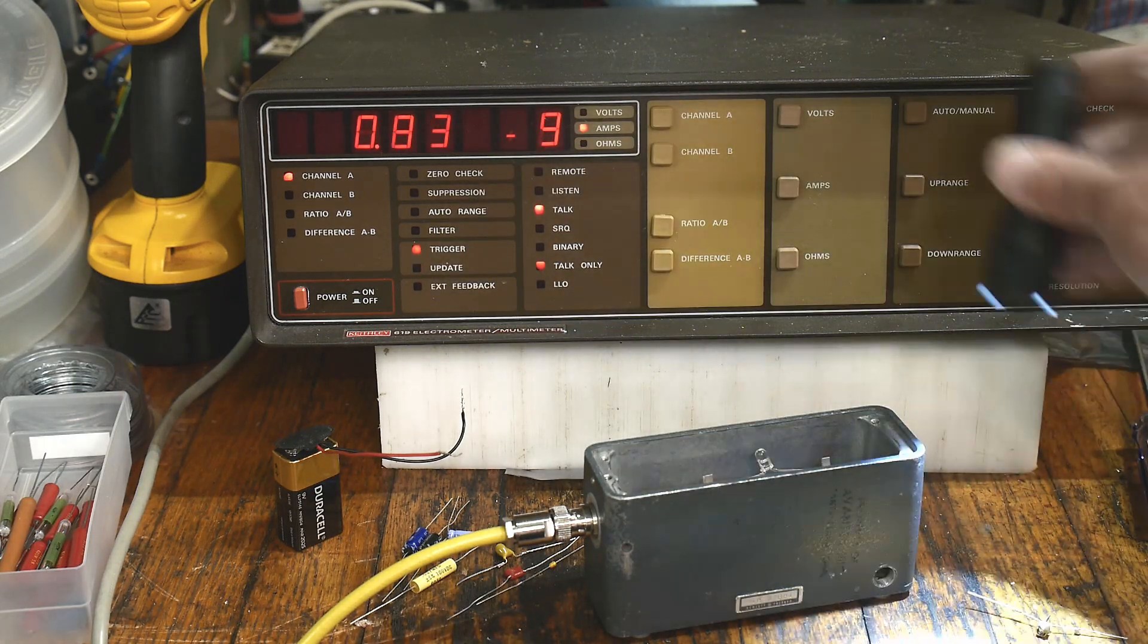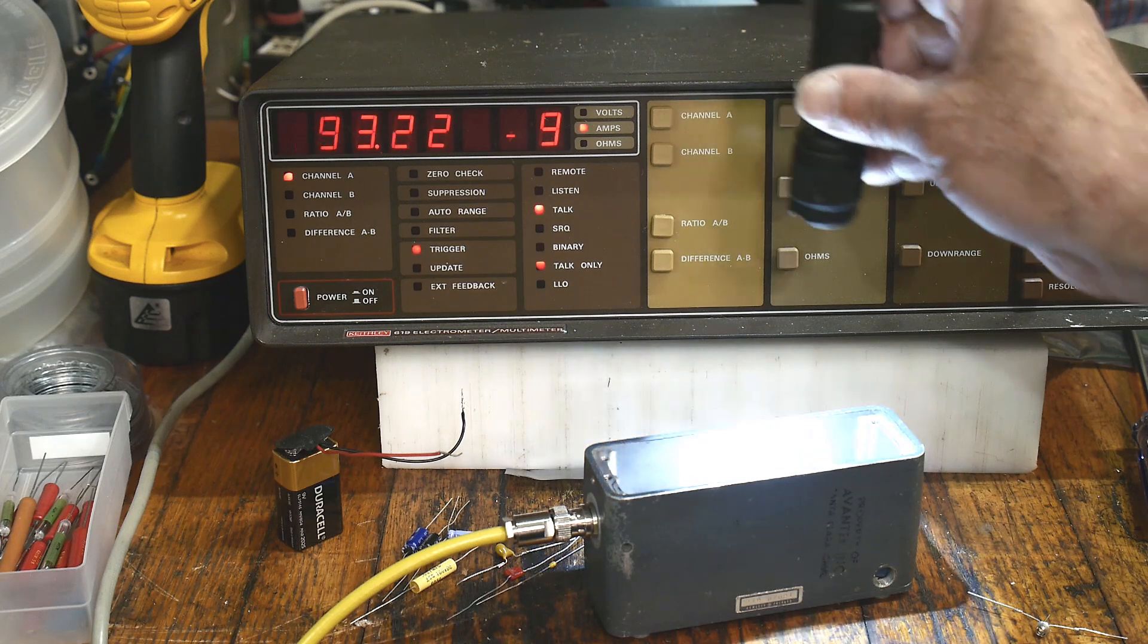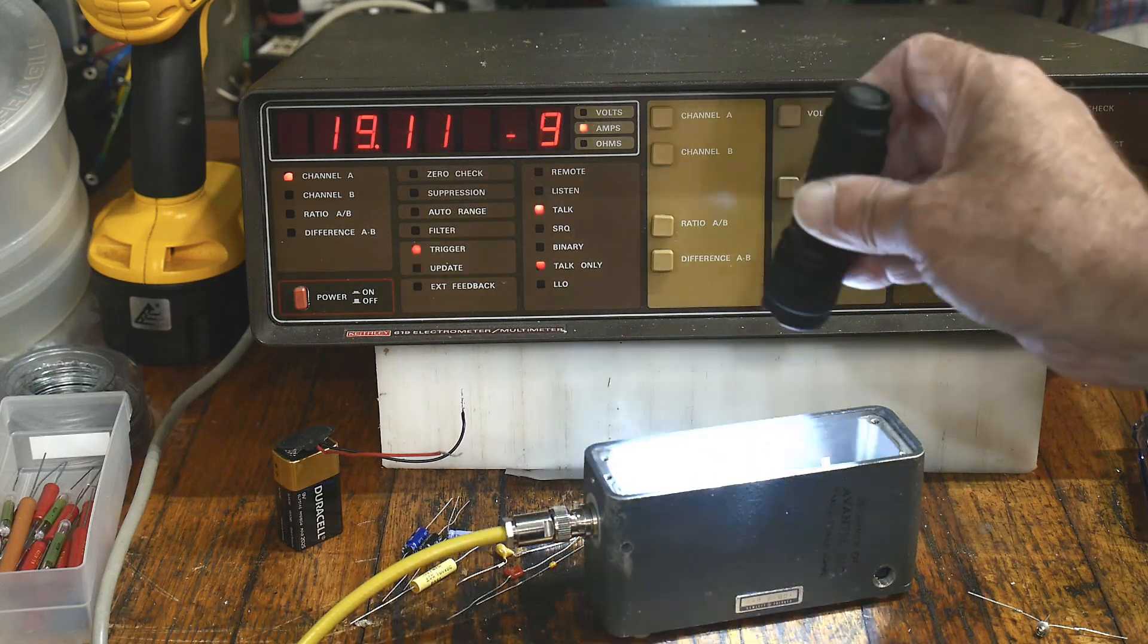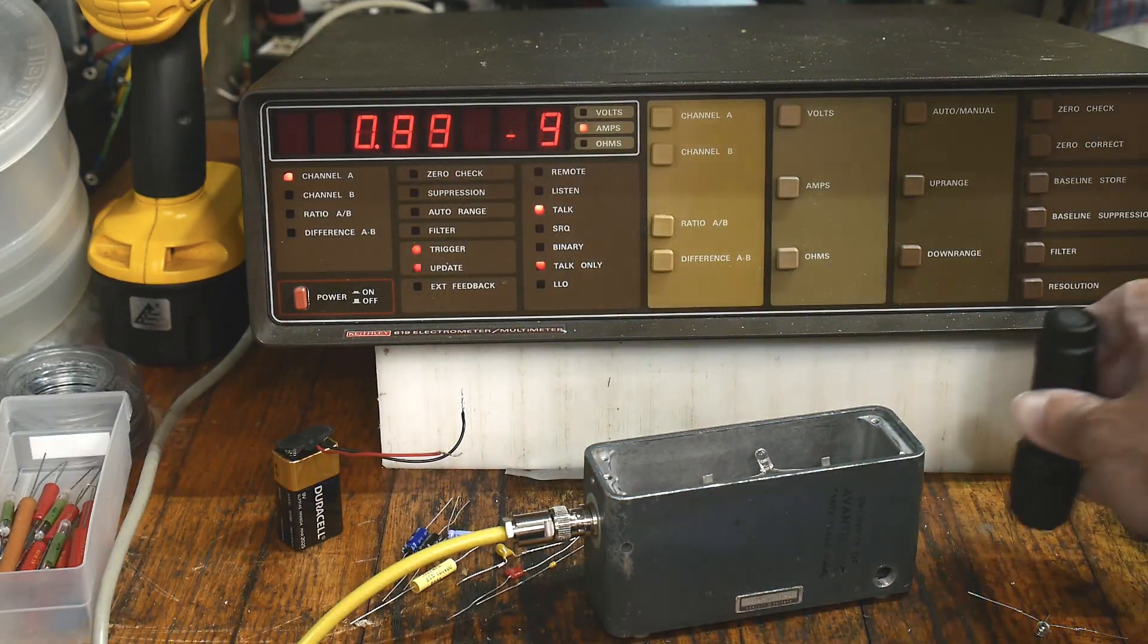To the minus nine. If I get my flashlight out, oh there we go, 100 nanoamps, right? So we can get a lot of photocurrent out of using an LED instead of a photodiode.